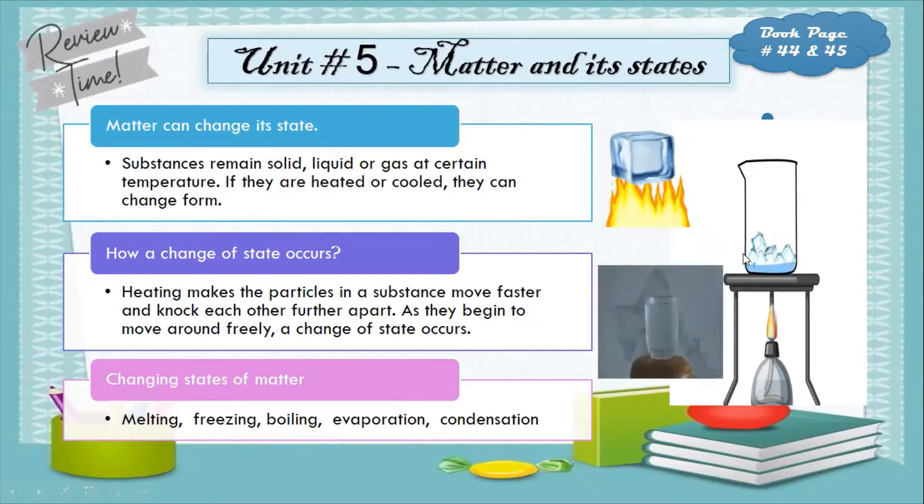Changes of state occurs in five different processes. Melting. If you heat a solid, the particles begin to move faster so they have a lot of energy. They hit against each other and begin to move apart. When this happens, a solid melts into a liquid. The temperature at which solid changes into liquid is called melting point.